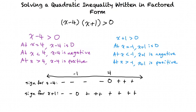Why exactly did we write out the signs of each factor on the number line? We did this because we want to find all values of x for which the product x minus 4 times x plus 1 is greater than 0, or positive. We can analyze the signs for each factor and see where the product is positive. Where the product is negative, there is no solution.